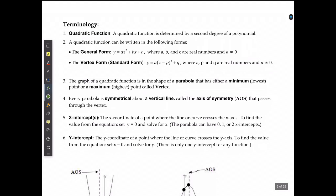So, there's some important terminology you need to know. The first is if we're talking about a quadratic function, a quadratic function is determined by a second degree of a polynomial which means that in order for it to be a quadratic you need to have an x squared. So, it's got to be a polynomial and it has to have an x squared. You can't have an x cubed and you can't just have x to the power of 1.